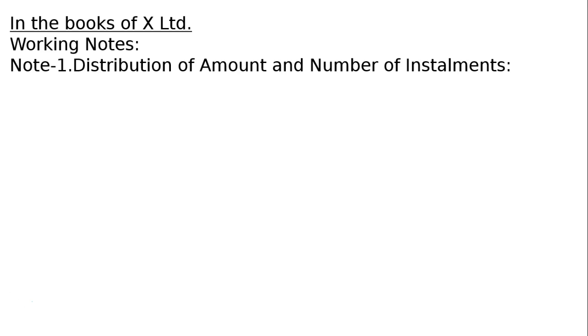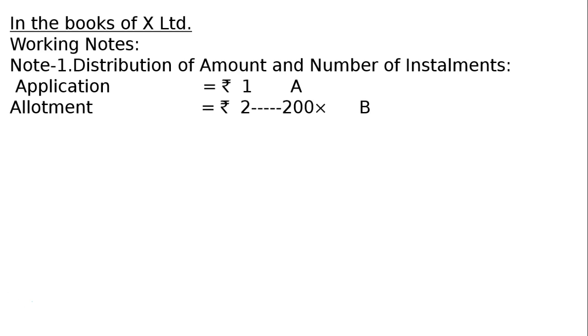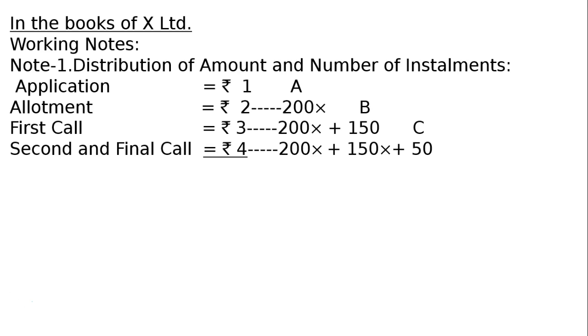Working notes in the books of X Ltd. Note 1: Distribution of amount and number of instruments. Application: Re 1, Allotment: Rs 2, First call: Rs 3, Second and final call: Rs 4. Total: Rs 10 per share.